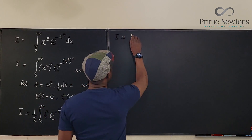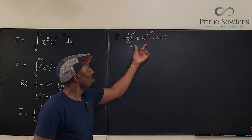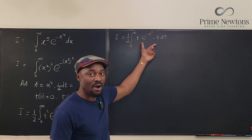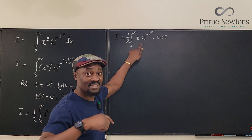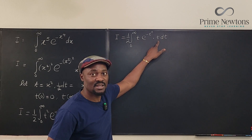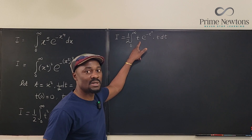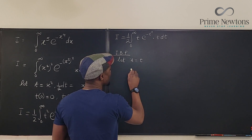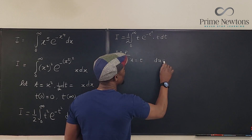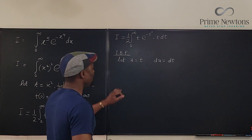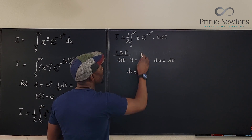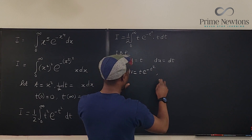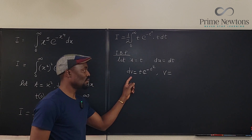So I is equal to — here is what I'm talking about. I know how to integrate t·e^(-t²), and I know how to differentiate t. We have to do integration by parts. For IBP, we'll integrate t·e^(-t²) and differentiate t. So u equals t, which means du equals dt, and dv equals t·e^(-t²) dt, and v will be the integral of that — let's compute it.